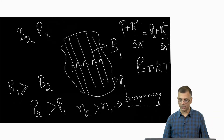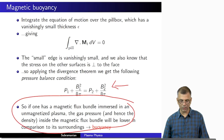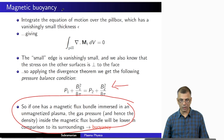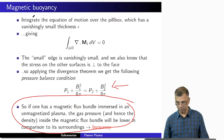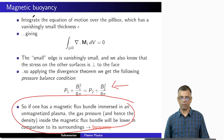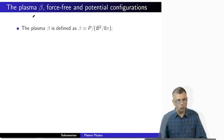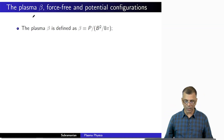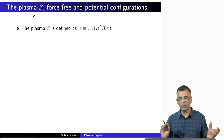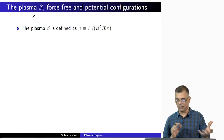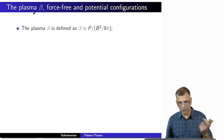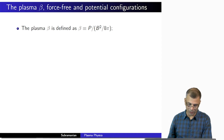This leads to magnetic buoyancy. This is one important consequence of magnetic fields being embedded in fluids. We've already started talking about magnetic pressure and gas pressure as though they were different kinds of things — P and B²/8π.